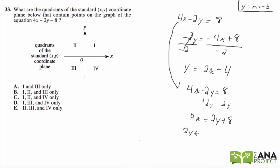2y plus 8 equals 4x. Then I'll subtract 8 from both sides. 2y equals 4x minus 8. Then we just divide by 2. y equals 2x minus 4.